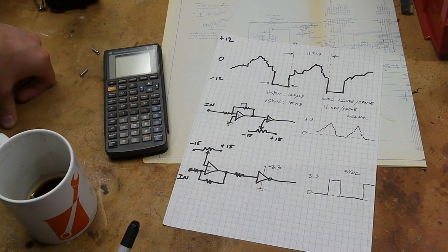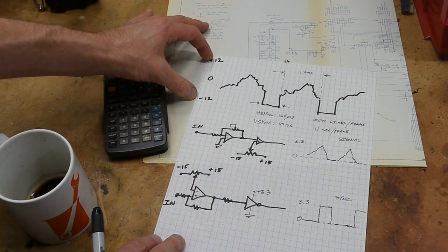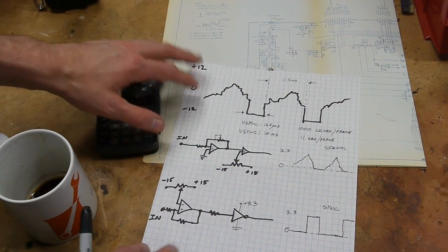In this case, I'm using the Teensy LC, which is a 3.3 volt microcontroller. What we want to do is translate this negative 12 to 12 volt signal into 0 to 3.3, and we also want to do something else.